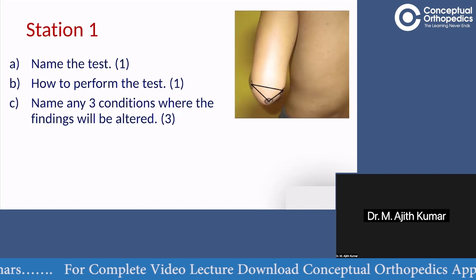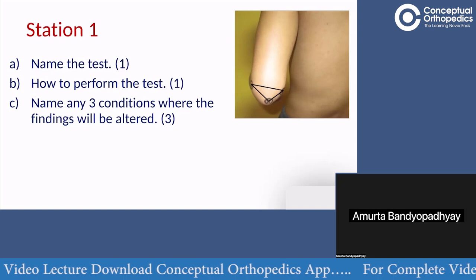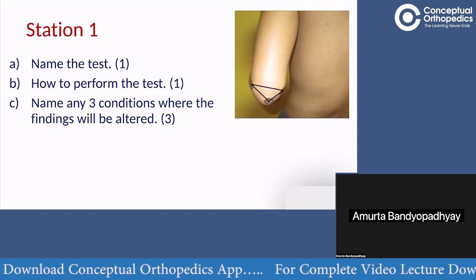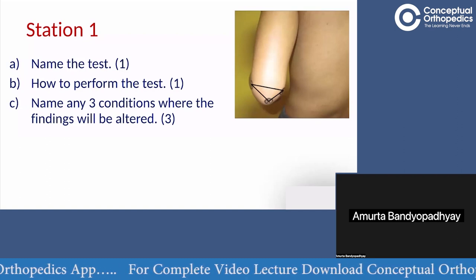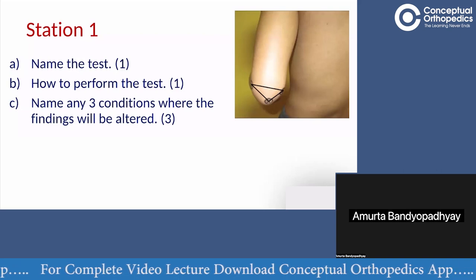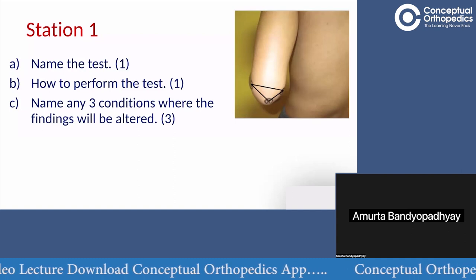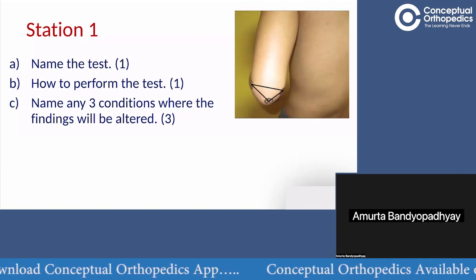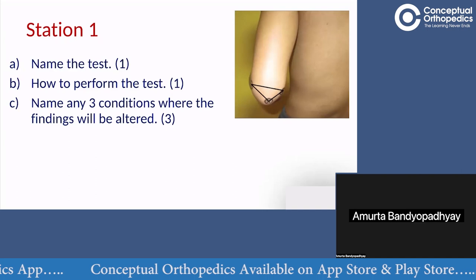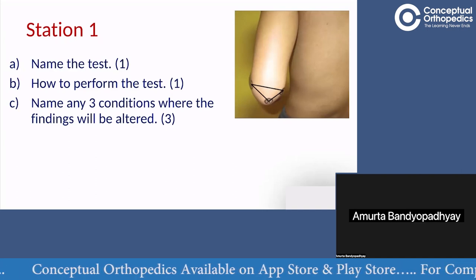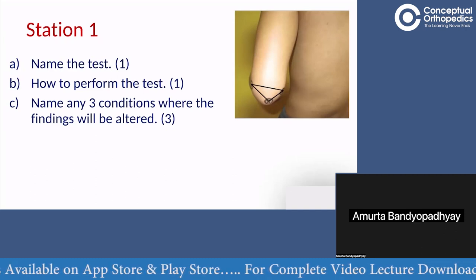The questions are: name the test, how to perform the test, and name any conditions where the findings will be altered. So the three-point relationship of the elbow — the lateral condyle, medial condyle, and the olecranon. There is no specific person's name for this test; it is simply called the three-point relationship test.